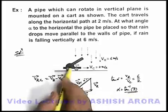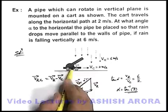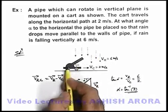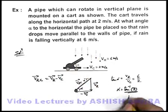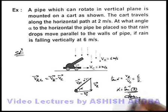This is the angle at which the pipe should be held so that the raindrops entering into the pipe will move without touching the walls of pipe. This is our answer to this problem.